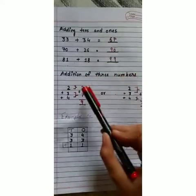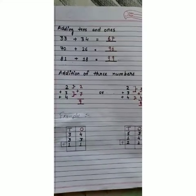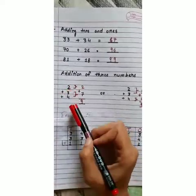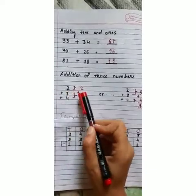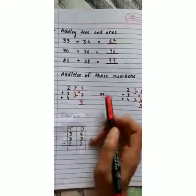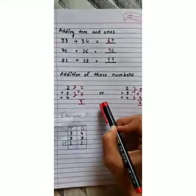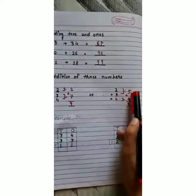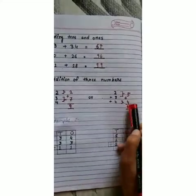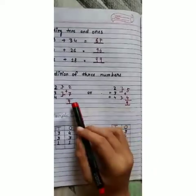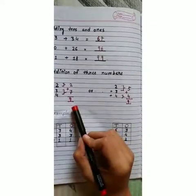Now, addition of three numbers. Three numbers can be added in any order and the sum remains the same. For example: two plus three plus four. Either take two alone and add three plus four together — three plus four is seven, and two plus seven is nine. Or take two plus three together — that is five — and four alone: five plus four equals nine. In both ways, the answer remains the same: nine.